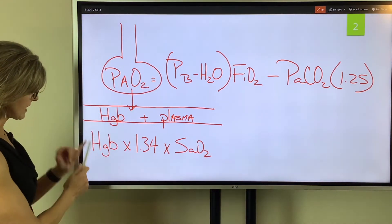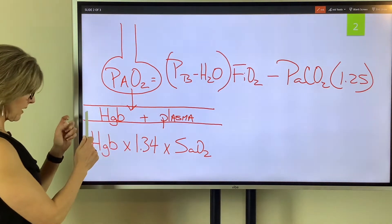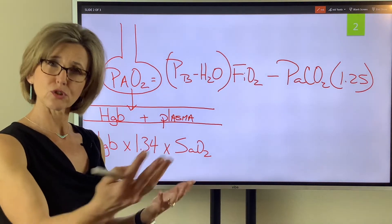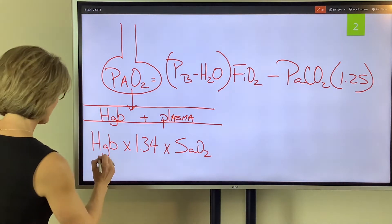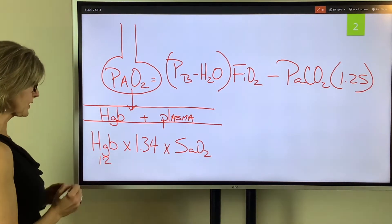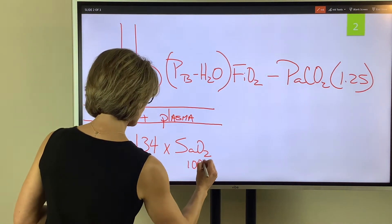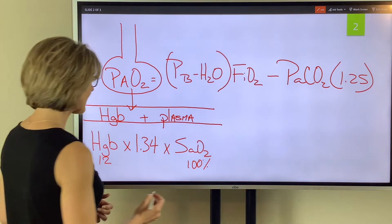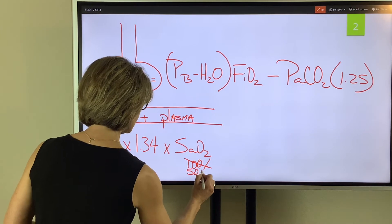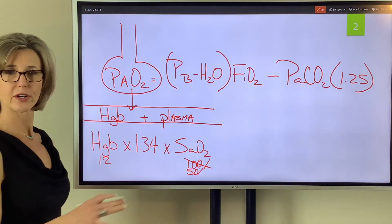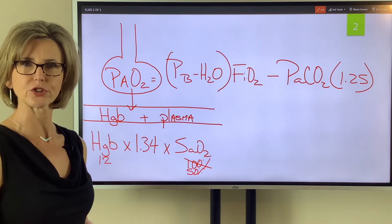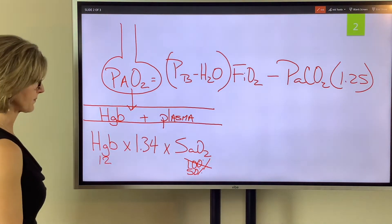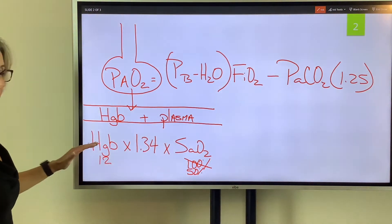That percentage of loading is the SaO2. So we have to have the hemoglobin — how many trucks we have — and the saturation, which is how full that truck is. If we have the correct number of hemoglobin, say 12, and it's completely saturated with oxygen, we're going to be carrying a lot of oxygen to the tissue. However, if our saturations are only 50%, we're going to carry half the amount of oxygen to the tissue. So: hemoglobin times 1.34 times saturation.